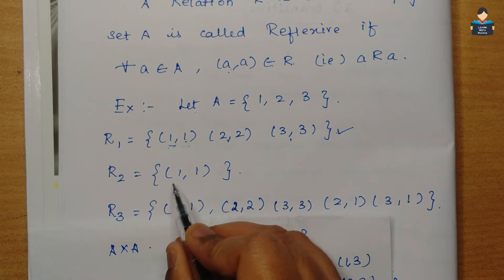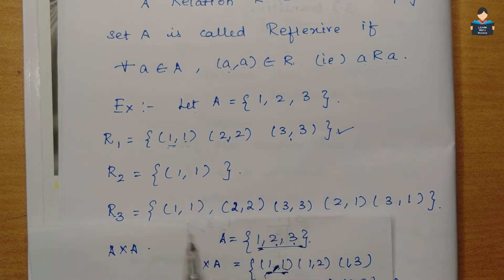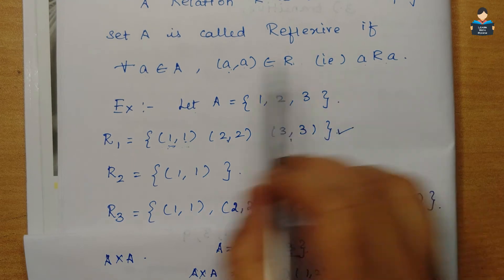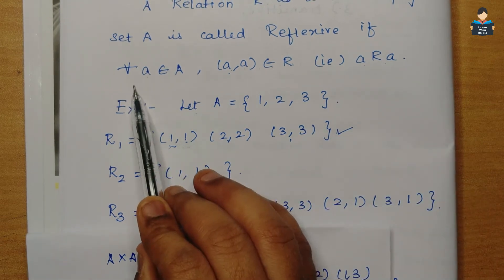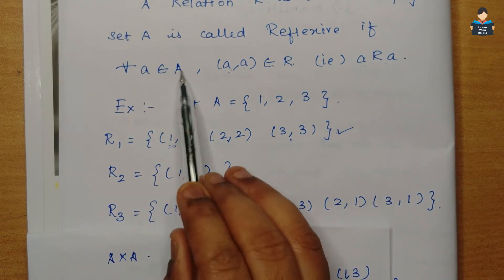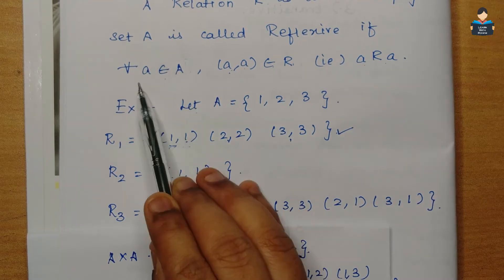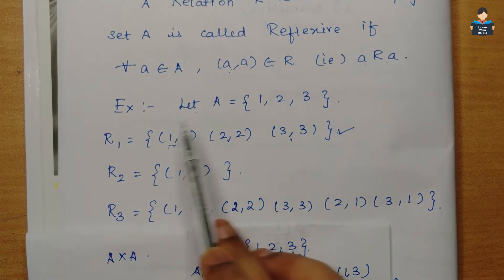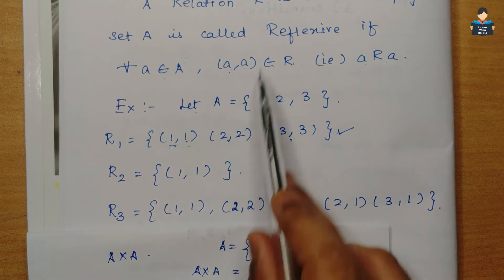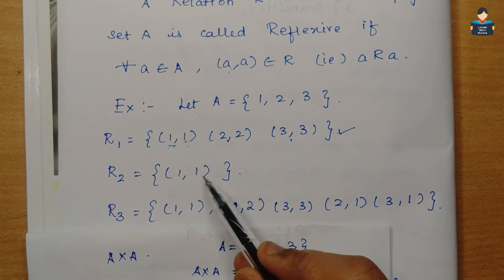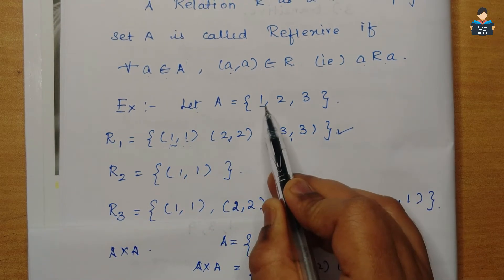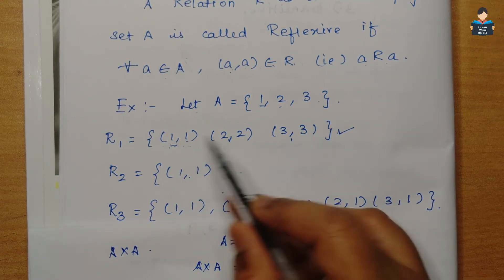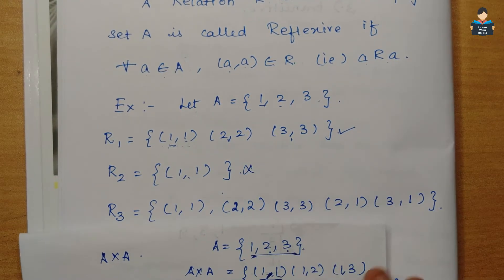Next, R2 is added. There is (1,1) in this relation. For all a belonging to A, we need to apply the reflexive condition. Since not all required (a,a) pairs are present, this relation is not reflexive.